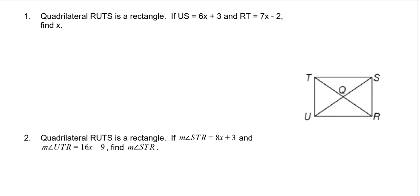So in this first one, it says quadrilateral RUTS is a rectangle. If US is 6x + 3 and RT, which is this one right here, is 7x - 2, find x. So if you remember, whenever we went over the properties, diagonals bisect each other, but they're also congruent. So if the diagonals are congruent, then that means that these are equal to each other. So 7x - 2 is equal to 6x + 3.